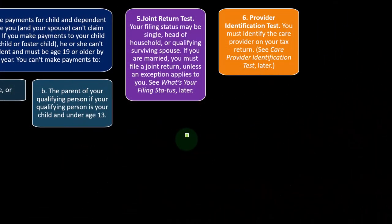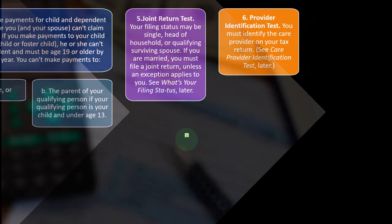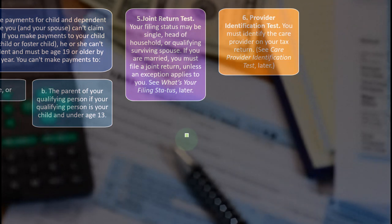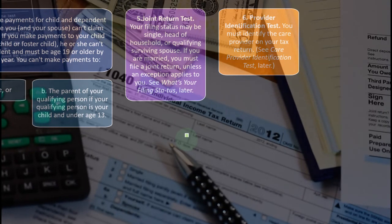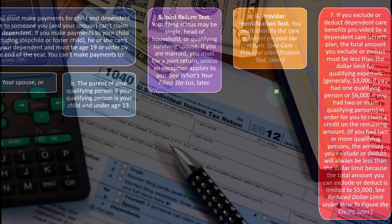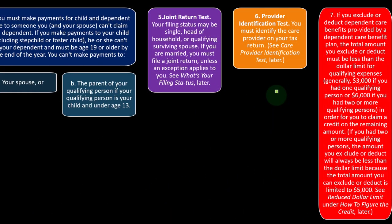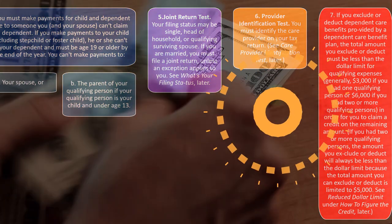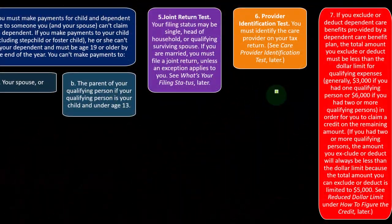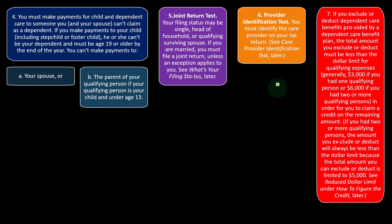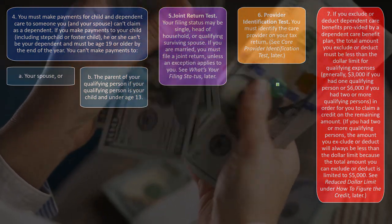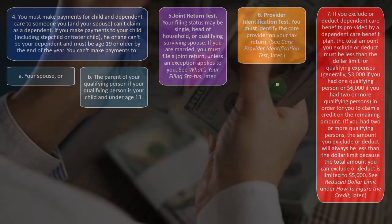The sixth test is the provider identification test. You must identify the care provider on your tax return — you have to tell the IRS who you paid to legitimize the situation. The seventh test: if you exclude or deduct dependent care benefits provided by a dependent care benefit plan, the total amount you exclude or deduct must be less than the dollar limit for qualifying expenses — generally $3,000 if you had one qualifying person, or $6,000 for two or more — in order to claim a credit on the remaining amount.